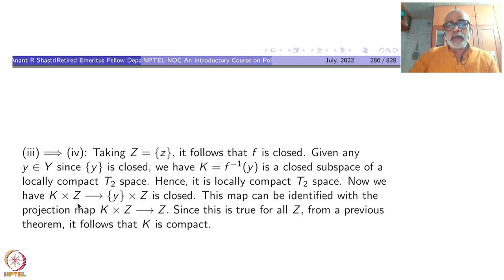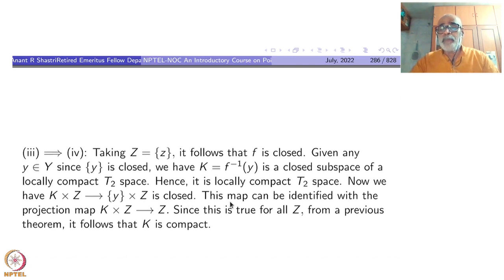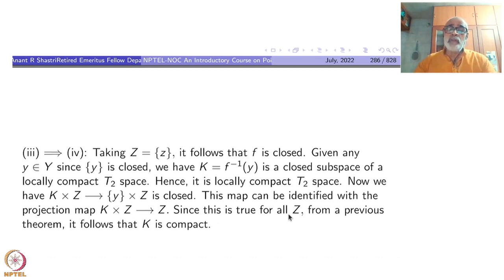We have K cross Z to Y cross Z as a closed map. This map can be identified with the projection map K cross Z to Z. Since this is true for all Z, from a previous theorem (Michael's theorem), it follows that K is compact. The projection map being closed for all Z implies K is compact. So three implies four is done.